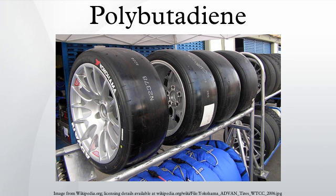The most common form is styrene-butadiene copolymer, which is a commodity material for car tires. It is also used in block copolymers and tough thermoplastics such as ABS plastic, creating a copolymer material with good stiffness, hardness, and toughness. Because the chains have a double bond in each repeat unit, the material is sensitive to ozone cracking.